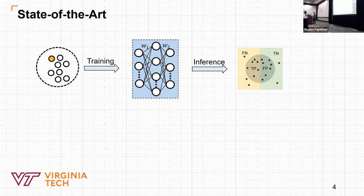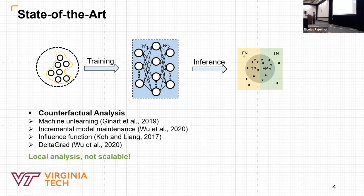One is counterfactual analysis. This line of work tries to change the input and analyze the change in model output to attribute the cause and effect between the training data points and the model behaviors. These works include machine unlearning, incremental model maintenance, influence function, and delta grid. However, these methods are not scalable when a large number of training data points are altered, so they fall into the local analysis.